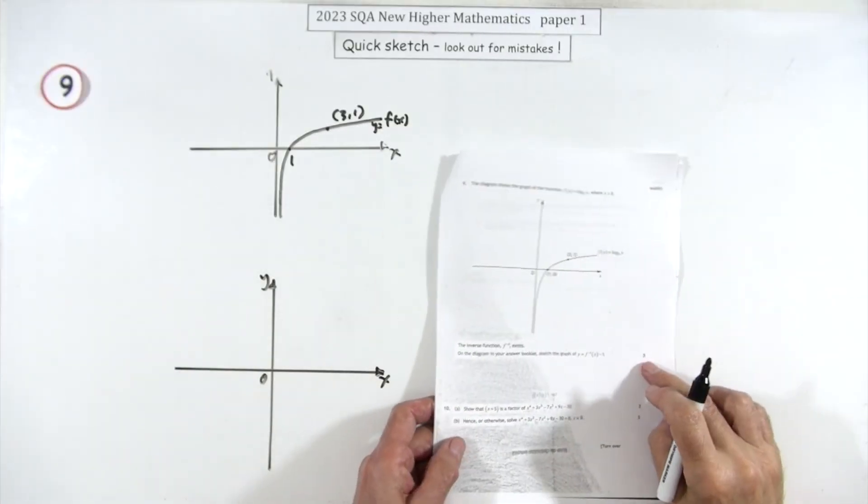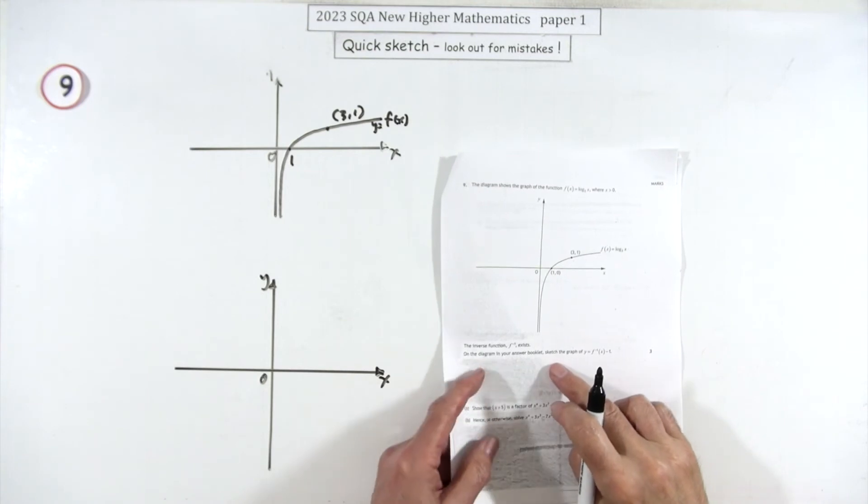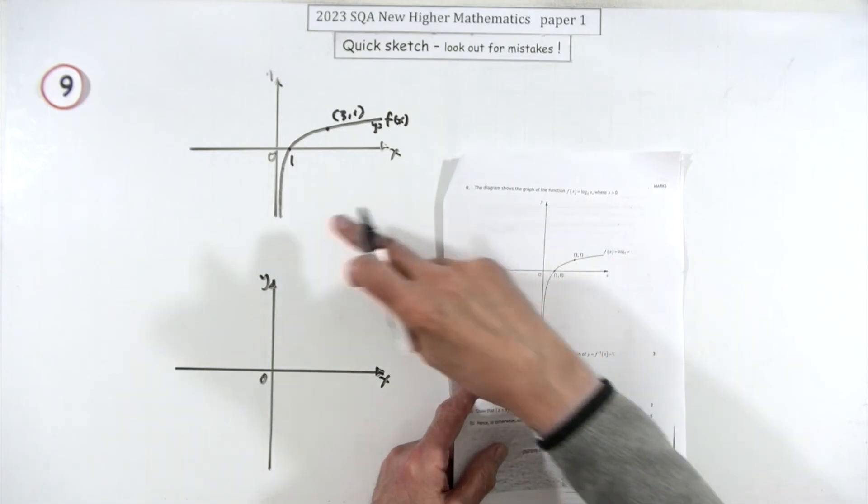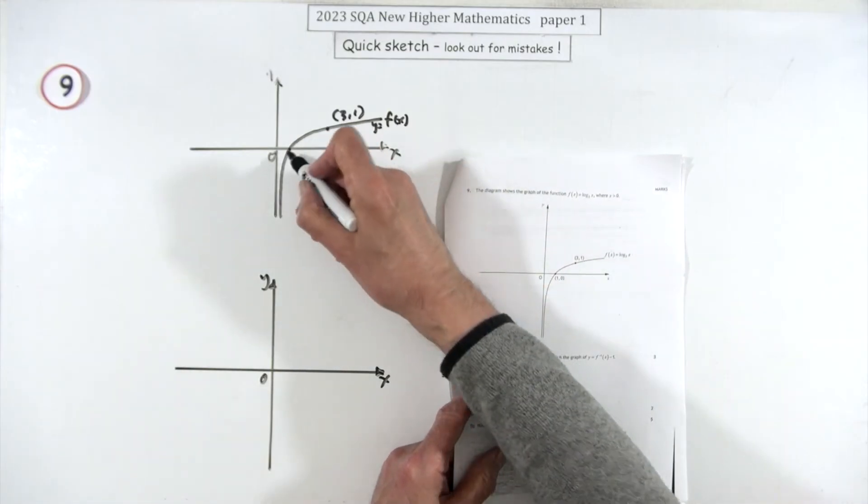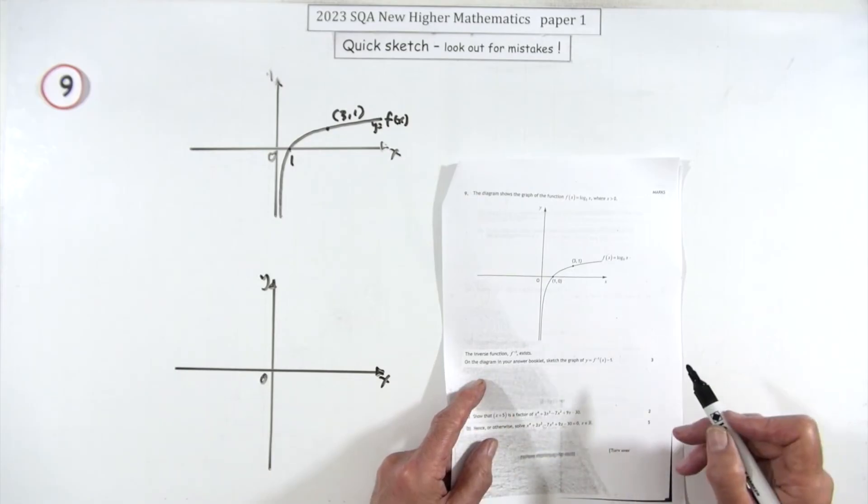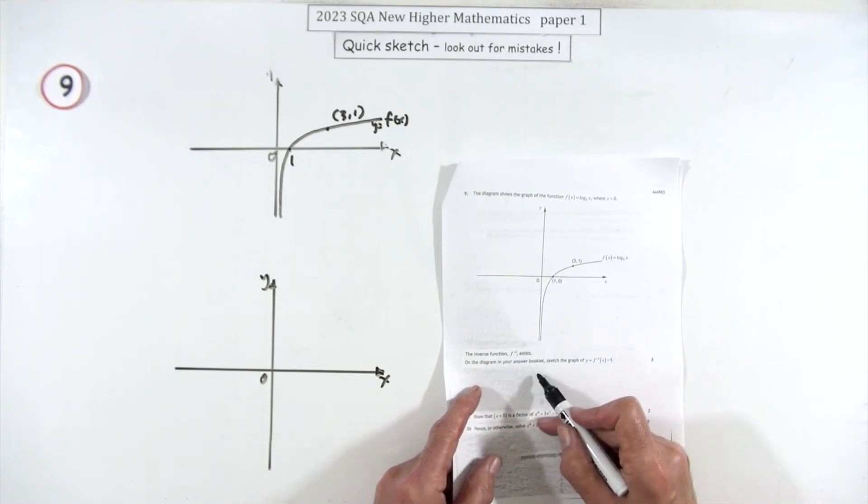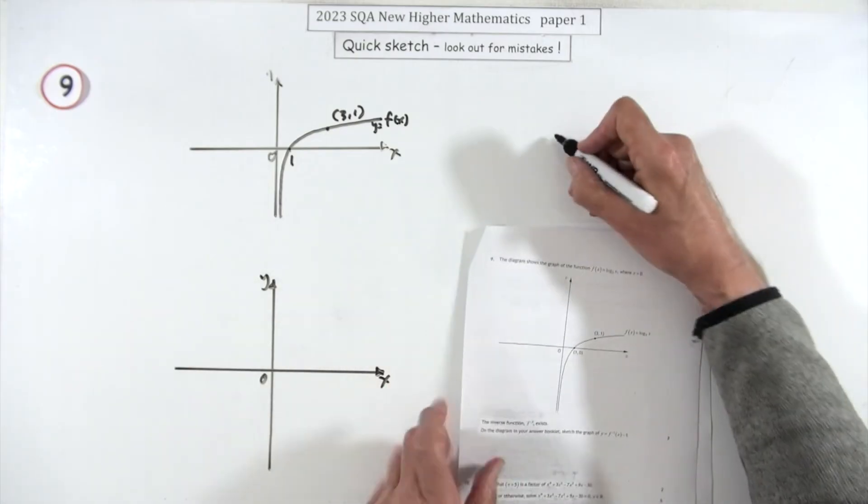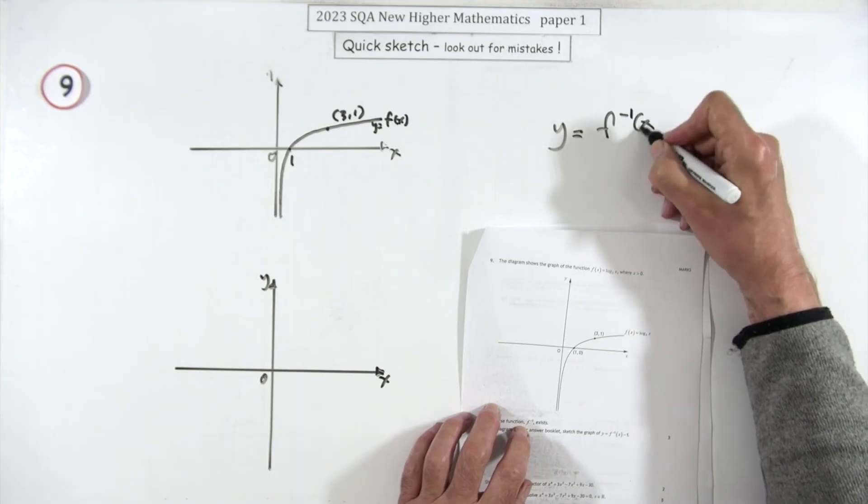Number nine, three marks. This diagram shows a graph of the function f(x) = log₃x. Those are the obvious two points you would have got from it. On the diagram, sketch the graph of y equals the inverse function minus one.